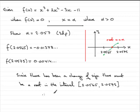So, therefore, that root, alpha, equals 2.057 to three decimal places.